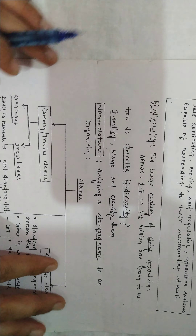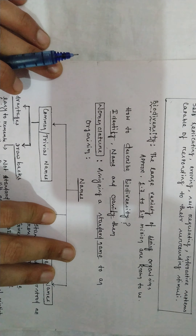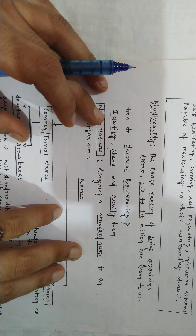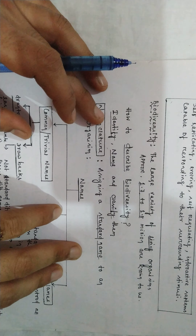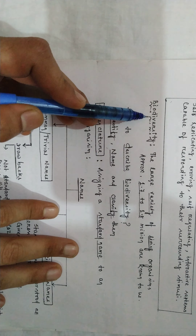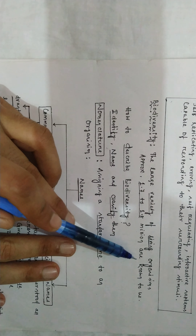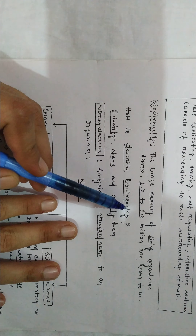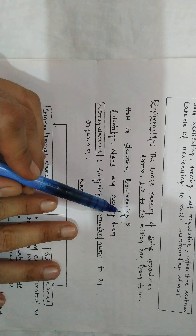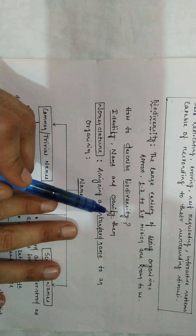There are too many living organisms all over the world. Now I'm going to deal with how to name these living organisms and what is biodiversity. Biodiversity is the large variety of living organisms — approximately 1.7 to 1.8 million are known to us, maybe more than that.